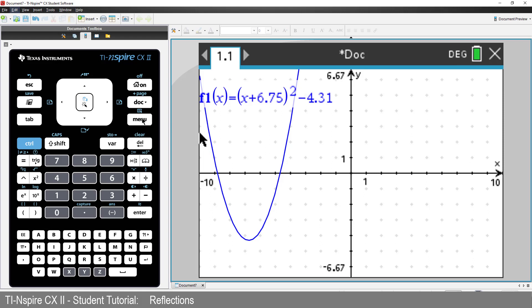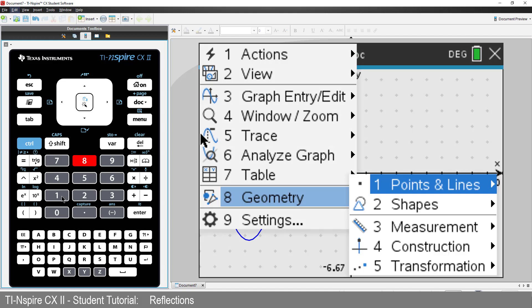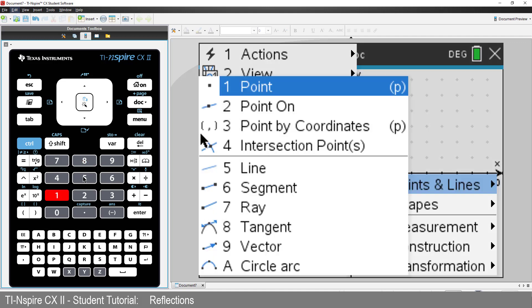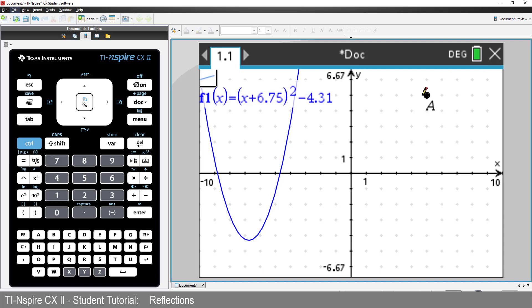This is where our grid will come in handy. We need two points to define our line. I'll place the first point in the first quadrant, where x and y would have the same value. And the second point in the third quadrant, again where x and y would have the same value.